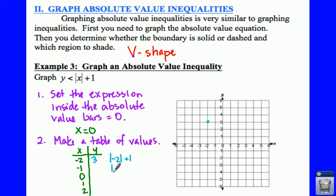Plug a negative one in. Well, the absolute value of negative one is one, plus one is just two. So you're going to go back one, up two.